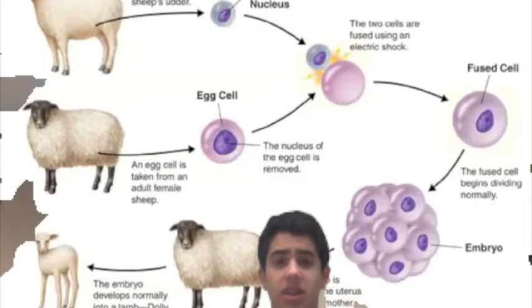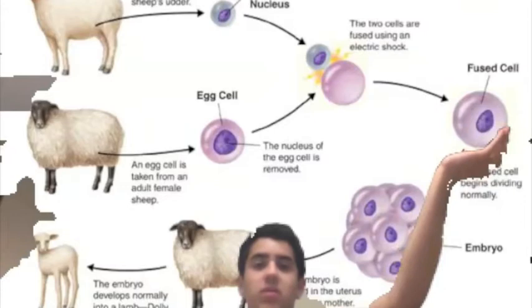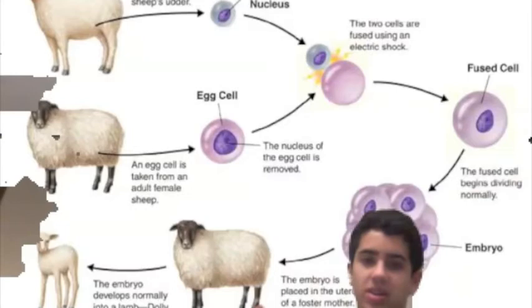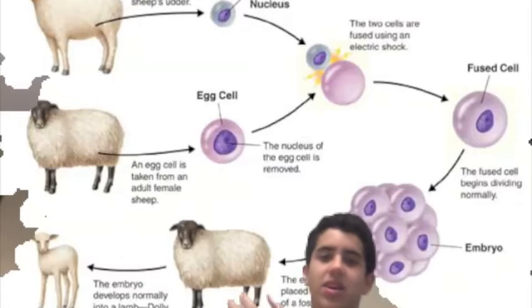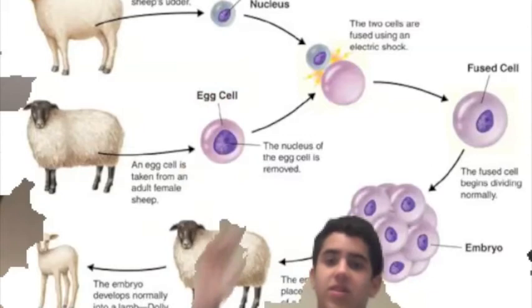Once this is done, they charge it with electricity so that it will start dividing. Over here you can see there is the fused cell. Once it's divided, it turns into a big embryo. And then we replace it into the foster mother, which is any female sheep. After a couple of months, it gives birth to the cloned lamb. The cloned lamb has the same DNA as the white lamb in the top left corner because we replaced the nucleus of the egg cell with the nucleus of the donor cell. This is why it looks exactly alike as the lamb in the top left corner.